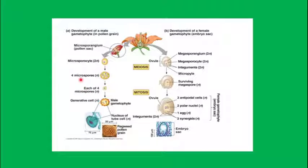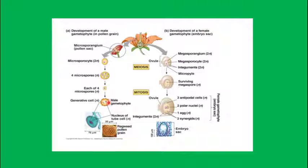Each of the four microspores will not degenerate as in the megaspore case — all four undergo mitotic division to form the male gametophyte. The male gametophyte has an outer layer called the exine and an inner layer called the intine. Inside are two cells: a generative cell and a vegetative (tube) cell. The exine is covered by sporopollenin, an organic compound that can withstand high temperature and strong acid, allowing pollen grains to be preserved as fossils.